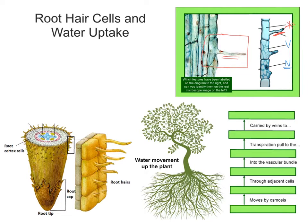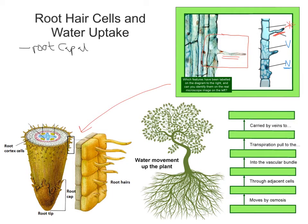If we were to zoom in on the red box drawn on the top right, what we'd get ultimately is something that looks like this at the bottom left. I've done a diagram to enlarge that particular area. So what we've got here is the tip of a root. At the very tip of a root is the root cap — a protective layer of cells. So at the tip of the root we've got the root cap.